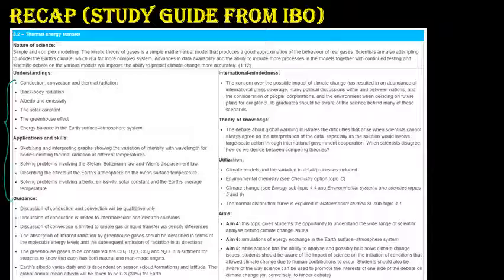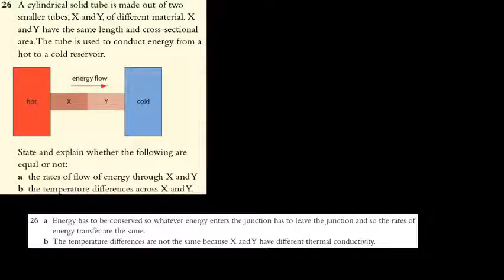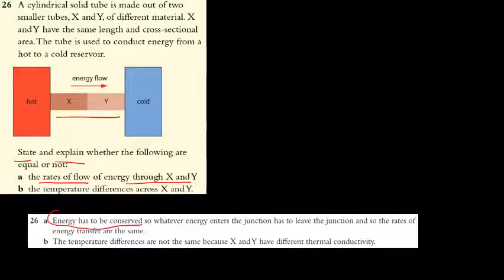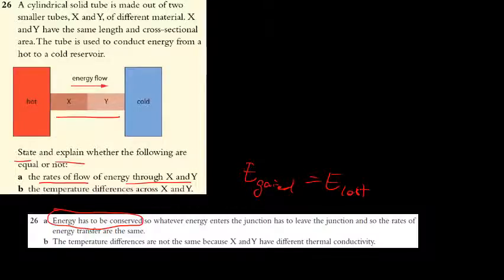For question 1: a hot and cold object connected by tubes X and Y. Are the rates of energy flow through X and Y the same? Yes — energy must be conserved, so energy gain equals energy lost. The energy transfer rate is the same throughout. However, the temperature difference across X and Y would not be the same, due to different thermal properties.